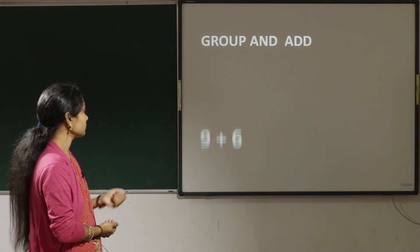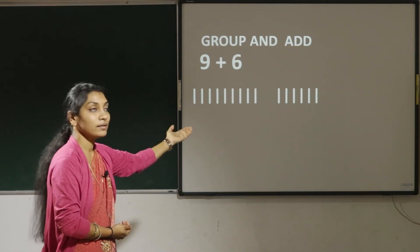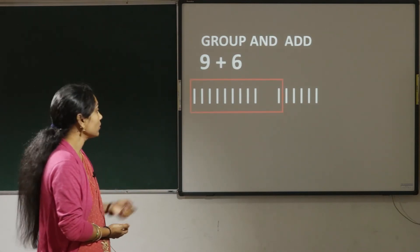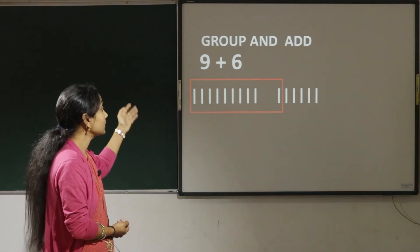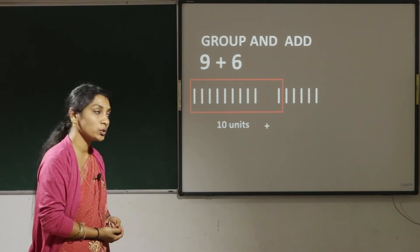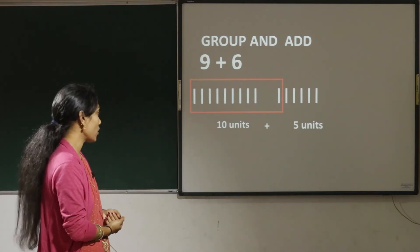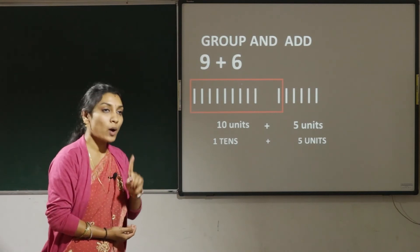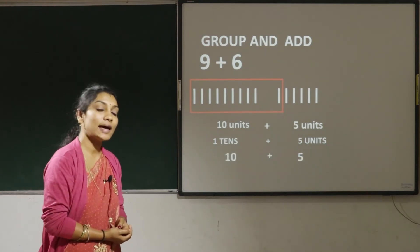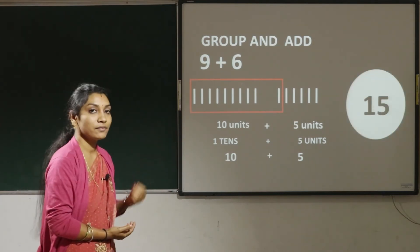Next, 9 plus 6. Here we have 9 sticks and there we have 6 sticks. Let us group into 10. The sticks inside the box — there are 10 sticks inside the box, so 10 sticks means 10 units — 1 ten plus 5 units. The value of 1 ten is 10, so 10 plus 5: the answer is 15.